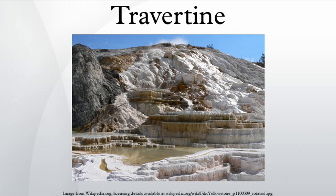Modern travertine is formed from geothermally heated supersaturated alkaline waters with raised pCO2. On emergence, waters degas CO2 due to lower atmospheric pCO2, resulting in an increase in pH. Since carbonate solubility decreases with increased pH, precipitation is induced.